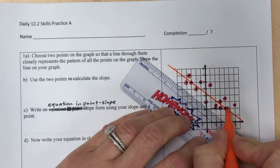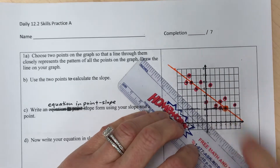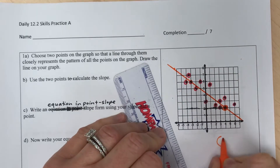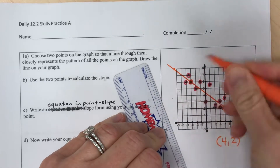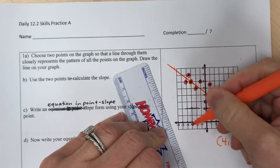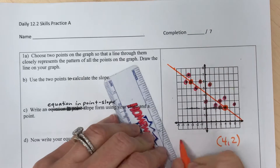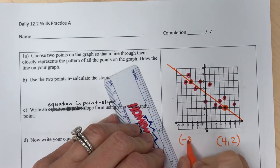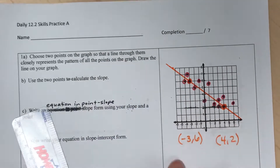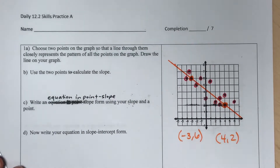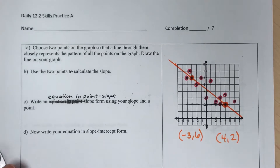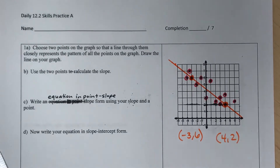The point I picked on this side was (4, 2), and the point on the other side was (-3, 6). I picked two points that seemed to flow through the data, and when I connected them, roughly half the points were above the line and half were below.